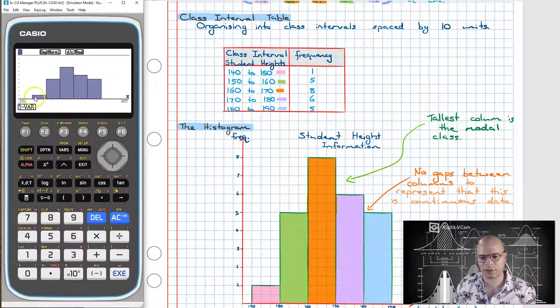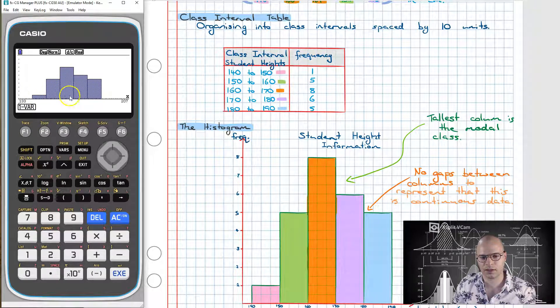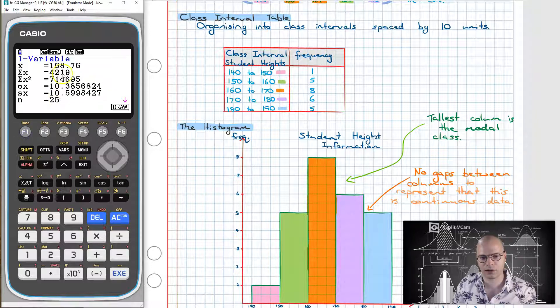This will then represent the graph that I have over here, shown over here. Now to pull some statistics from this graph we can simply click on F1 and lo and behold we get all of our statistical data that we'll be learning about in a few lessons time.